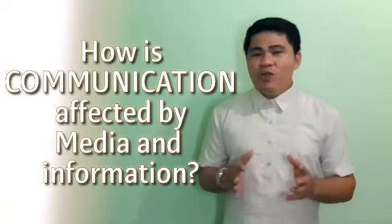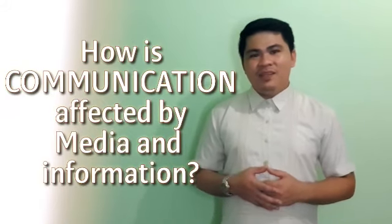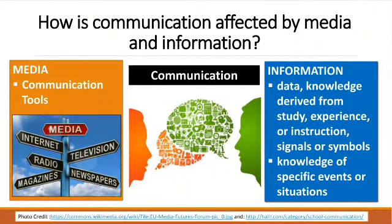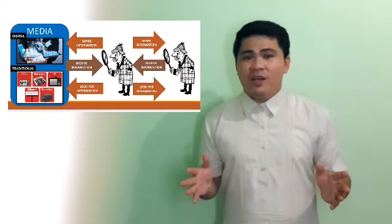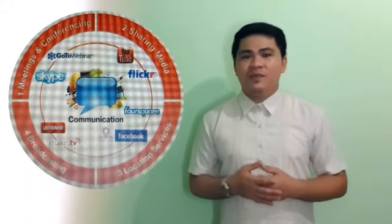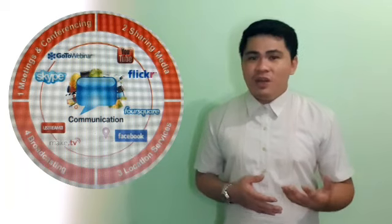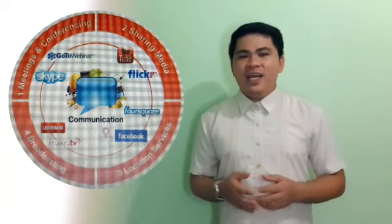Now, how is communication affected by media and information? Media are used as communication tools, while information refers to data, knowledge derived from study, experience or instruction, signals or symbols — also knowledge of specific events or situations. Media are a good communication channel; they make communication easier. People can now talk with each other even when they are far apart because of media. We have cellular phones and any gadget we can use for phone conversations, calls, video calls, chats, and many others. That is the power of media. But communication using media can also be distracted at times, especially when people are spreading malicious, fake, or wrong information.